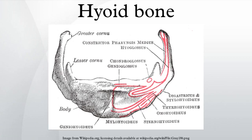The chondroglossus rises from the medial side of the base. The lesser cornua are derived from the second pharyngeal arches. The second pharyngeal arch gives rise to the lesser cornua of the hyoid and a superior part of the body of the hyoid. The cartilage of the third pharyngeal arch forms the greater cornua of the hyoid and the lower portion of the body of the hyoid. The hyoid is ossified from six centers, two for the body, and one for each cornu.